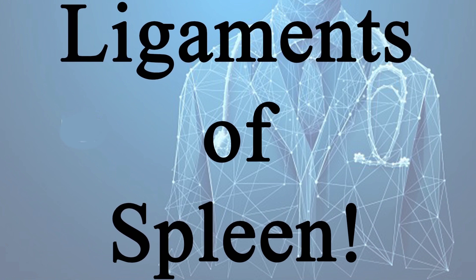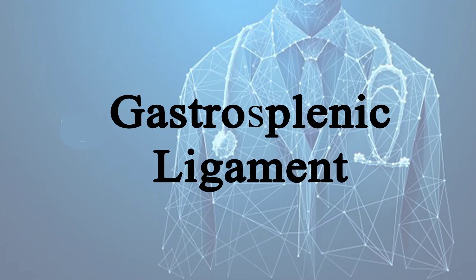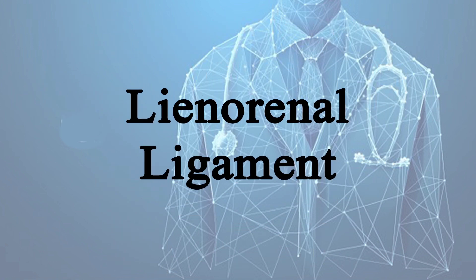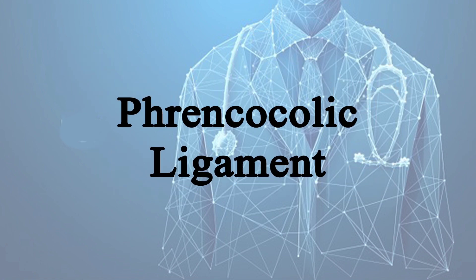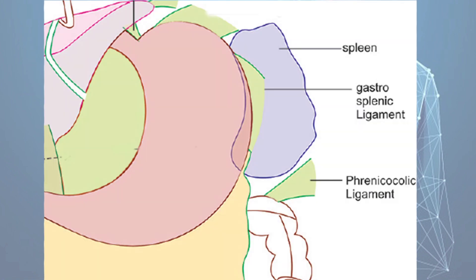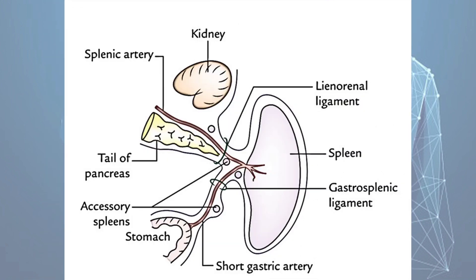The ligaments of the spleen are the gastrosplenic ligament, lienorenal ligament, and phrenocolic ligament. The gastrosplenic ligament extends from the hilum of the spleen to the greater curvature of the stomach. The lienorenal ligament extends from the hilum of the spleen to the anterior surface of the left kidney. The phrenocolic ligament is not attached to the spleen but supports its anterior end.